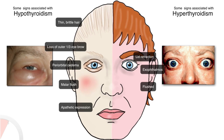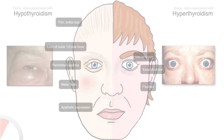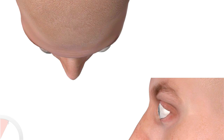Around the eyes, look for any periorbital edema or signs of exophthalmos, such as being able to visualize the sclera above and below the iris. Examine for proptosis from the side and above, observing if the eye protrudes past the supraorbital ridge.